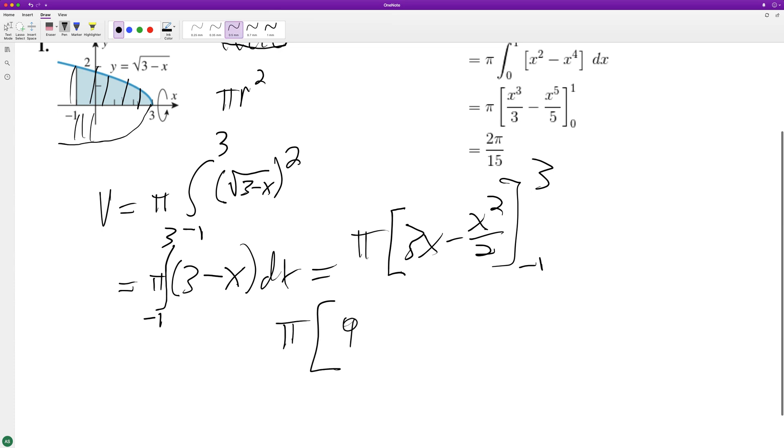Starting with this, we get nine minus nine over two, minus negative three minus one half.